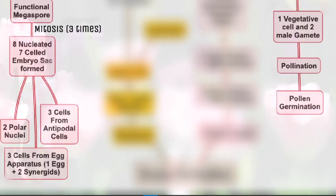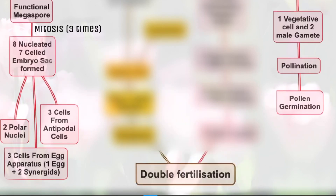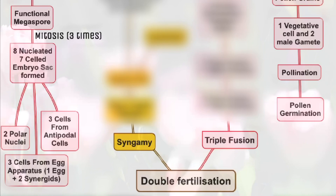Double fertilization is the most important part of this chapter and has been asked many times in previous year exams, so don't skip it. Double fertilization is a complex fertilization mechanism of flowering plants (angiosperms) and occurs only in angiosperms. This process involves the joining of a female gametophyte with two male gametes. After entering one of the synergids, the pollen tube releases two male gametes into the cytoplasm. One male gamete moves towards the egg cell and fuses with its nucleus, completing syngamy.